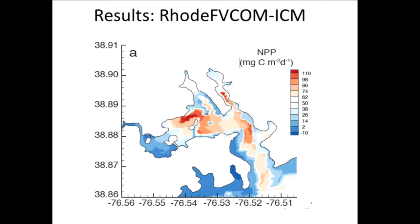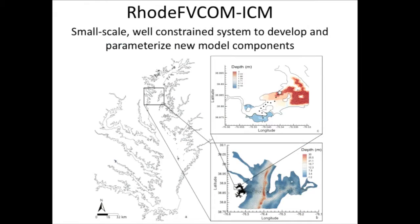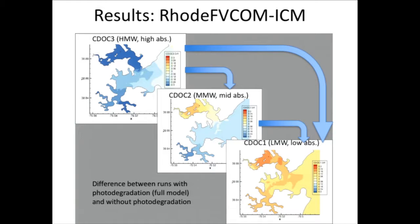You'll see that we have an accumulation in runs without photodegradation of these DOC2 and DOC1 compounds, or in runs with photodegradation because they are the product of the sequential degradation of the DOC3. And in model runs with the photodegradation on, we actually have a loss of the DOC3 as it gets photodegraded. This is just saying that the model is doing what we expect it to do in terms of the DOC distribution. These are all in milligrams of carbon per liter. Up in the wetland, we get almost a difference of one to two milligrams of carbon per liter on average.